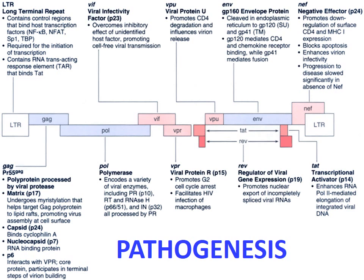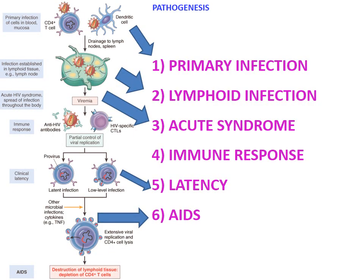The envelope polyprotein GP160 is processed into GP120 and GP41. GP41 anchors the complex to the cell surface. GP120 has affinity for surface receptors of CD4 T cells and also for APCs like monocytes and macrophages, though affinity for macrophages is less compared to lymphocytes.